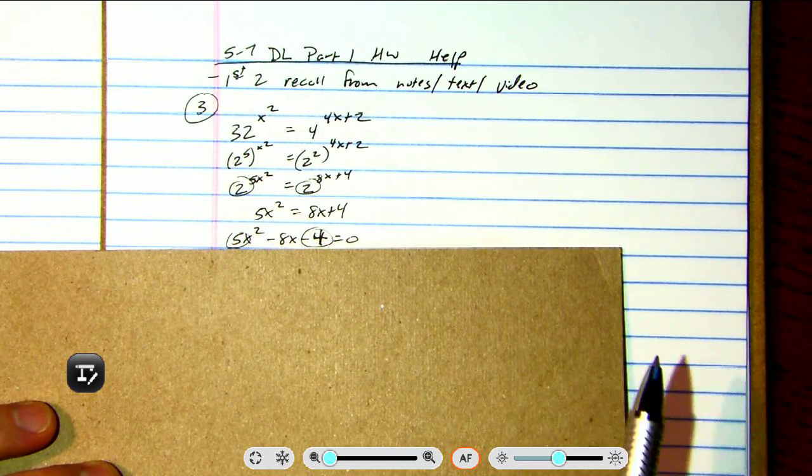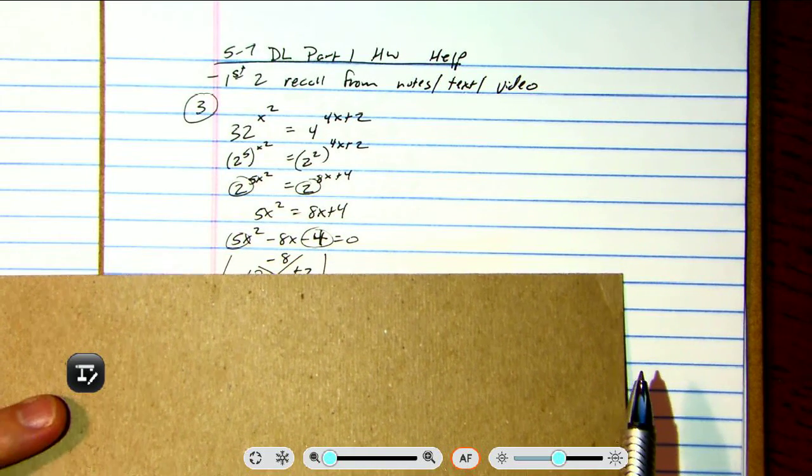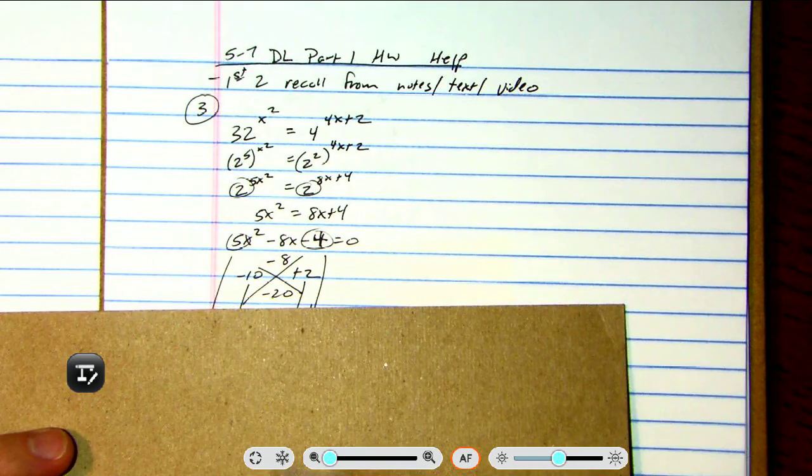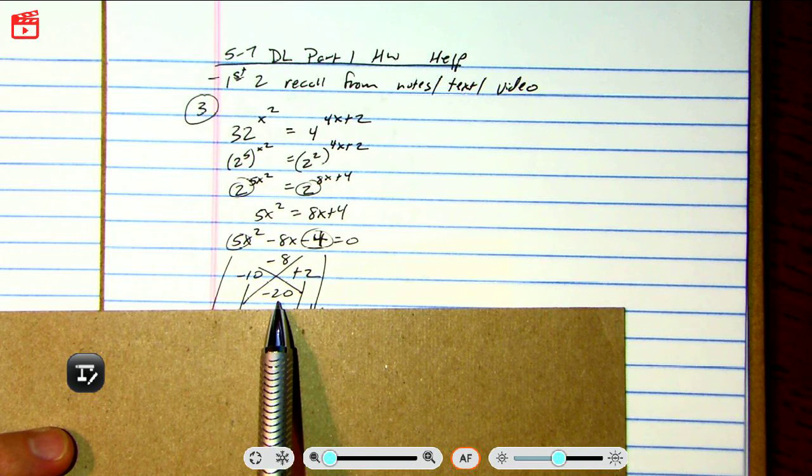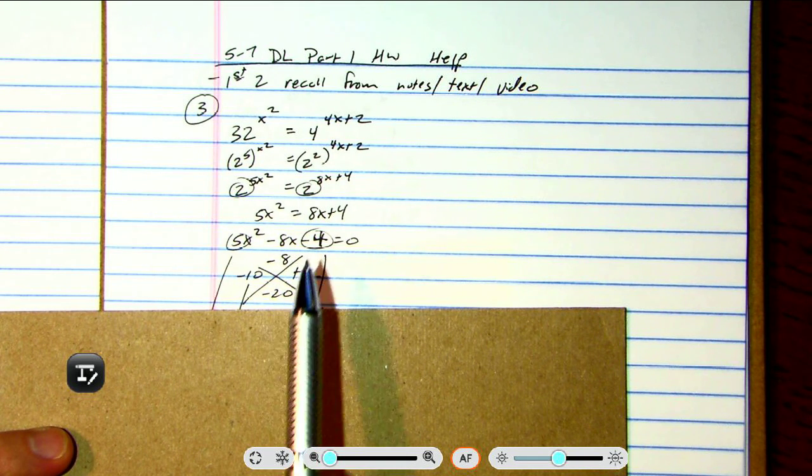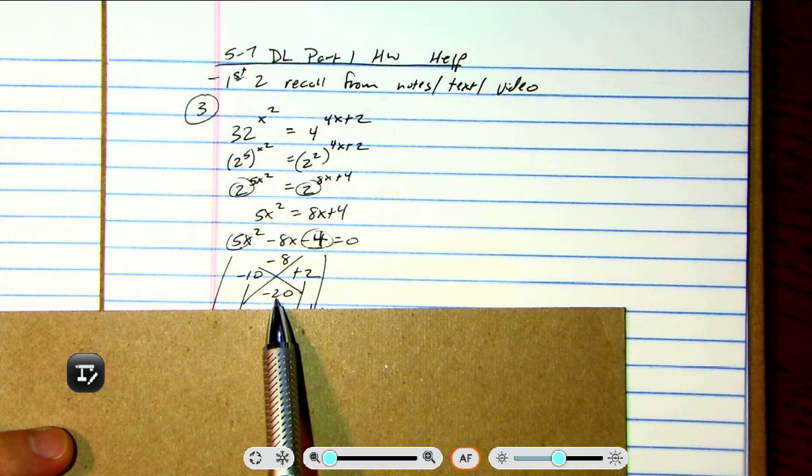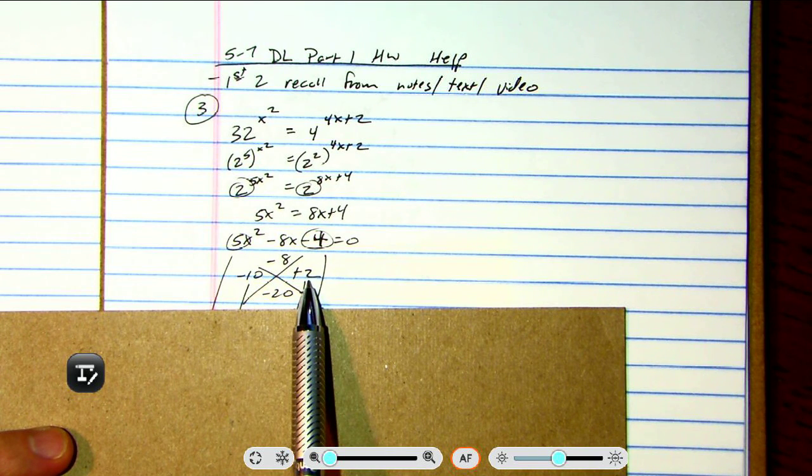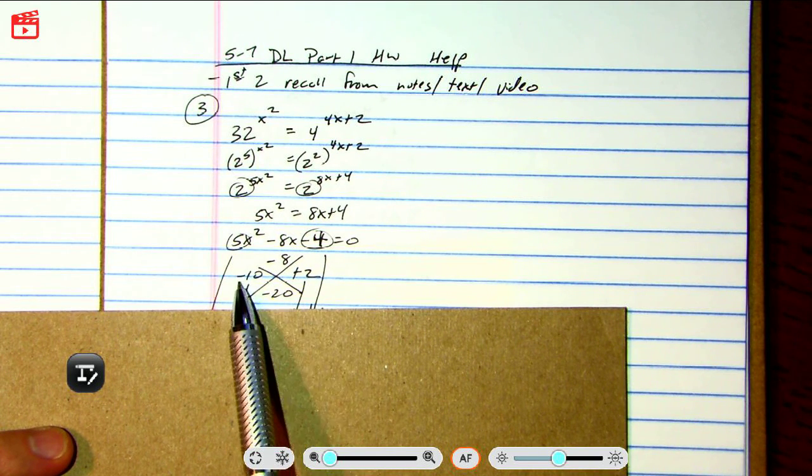So here's how you factor this one. You drop the negative 8, you multiply the 5 times the negative 4 to get this negative 20, just the same thing we always do. What numbers add up to this but multiply to this? Well, it's negative 10 and plus 2. I know before I've had you guys divide by leading coefficient, but that's kind of janky. I want to do it this way now.